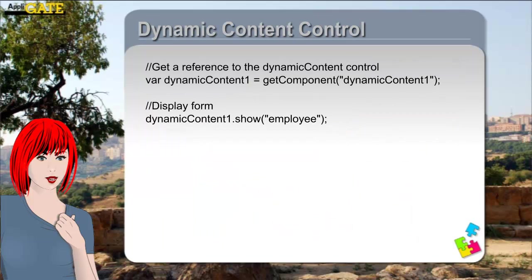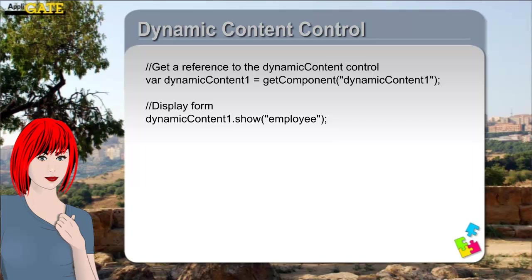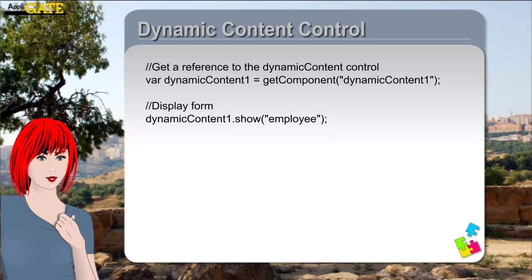As the name Dynamic Content Control already suggests, we can dynamically switch between controls with the aid of it. The content can be any control or container. In the property 'default facet', we specify the key name of the container that has to be shown by default. To programmatically select a specific custom control, you first create a reference to the dynamic content control using the global get component function with the ID of the control as argument. To select a specific control, we use the method 'show' with its key name as argument. The method can have a second argument where we can specify an action — for example, the Note ID of a Notes document we want to load.